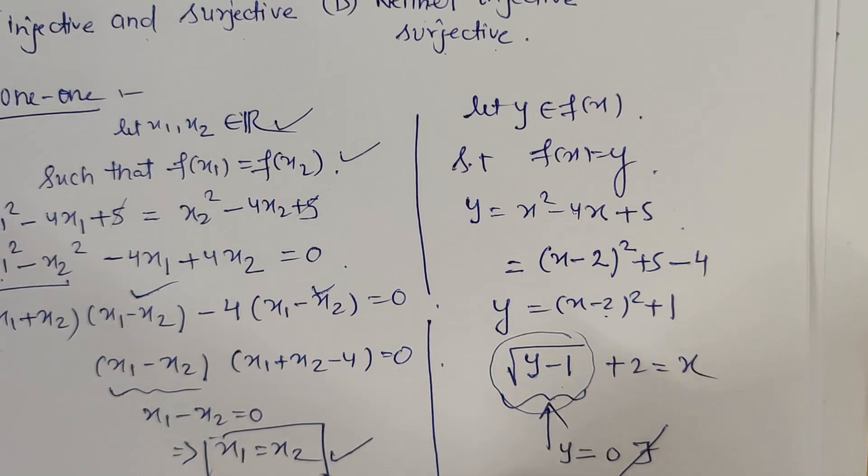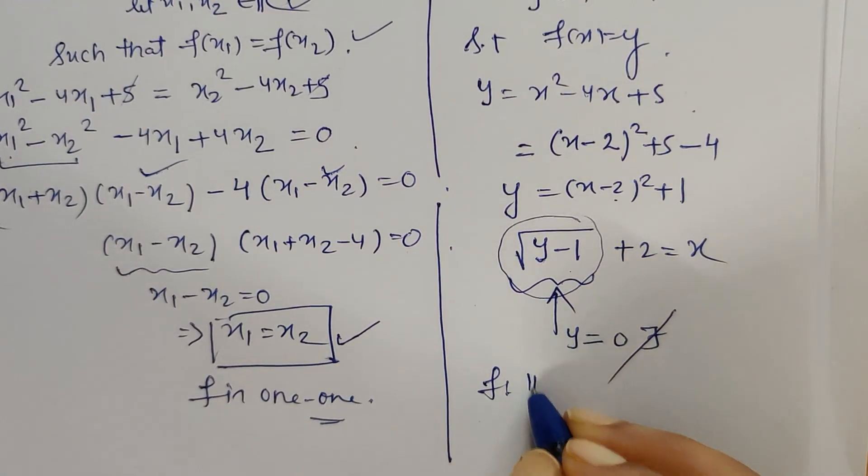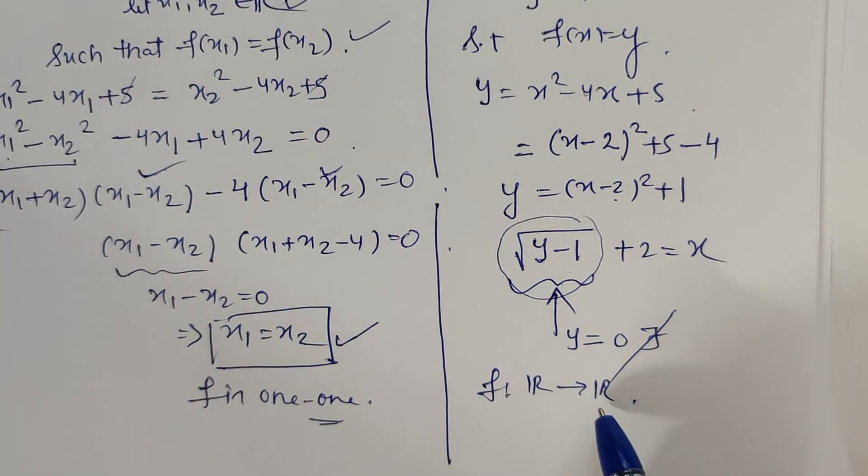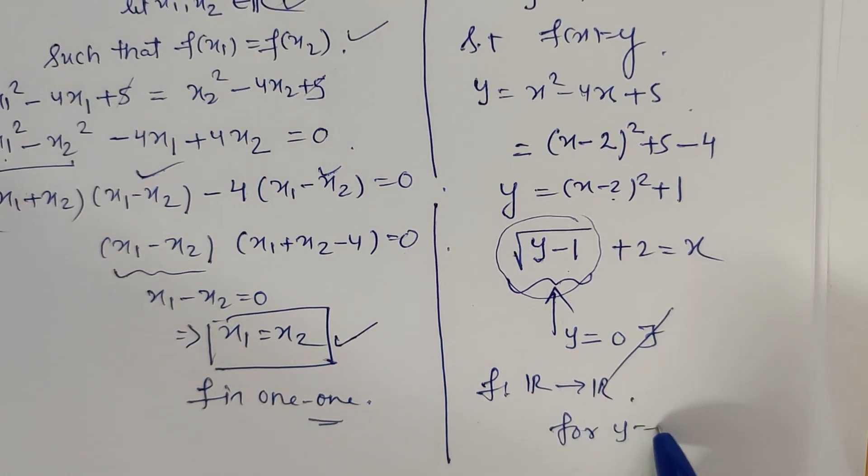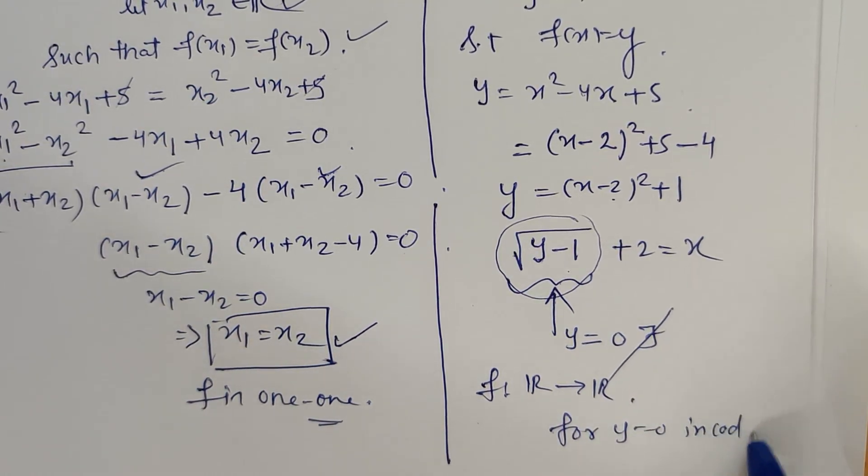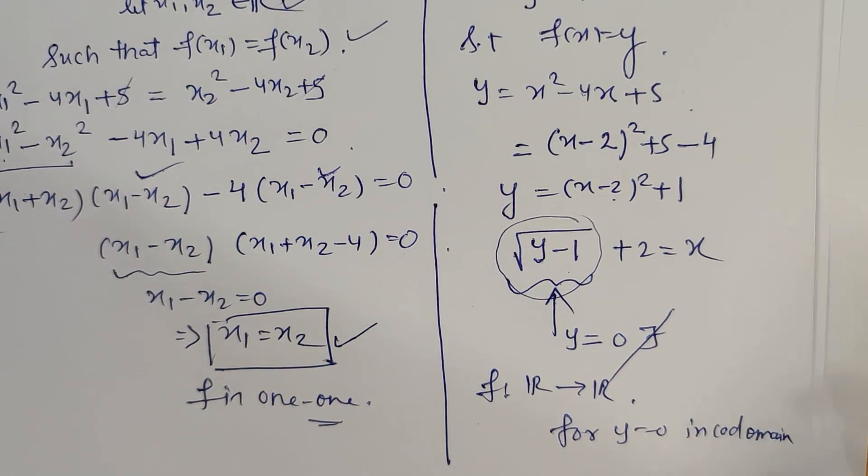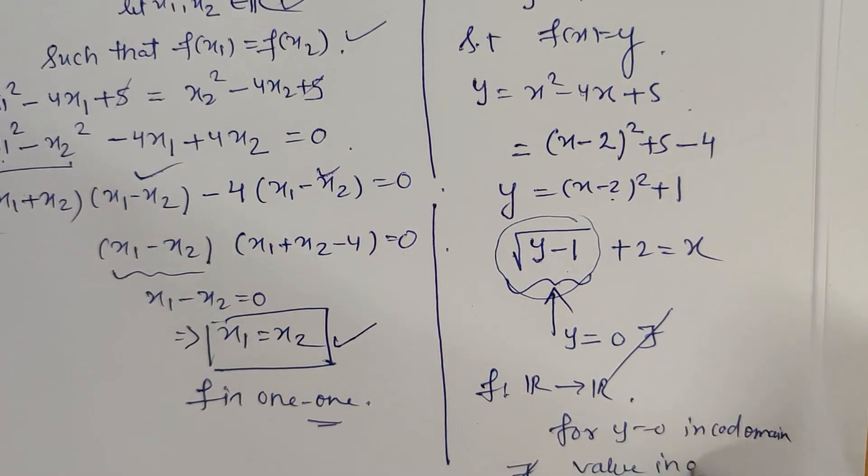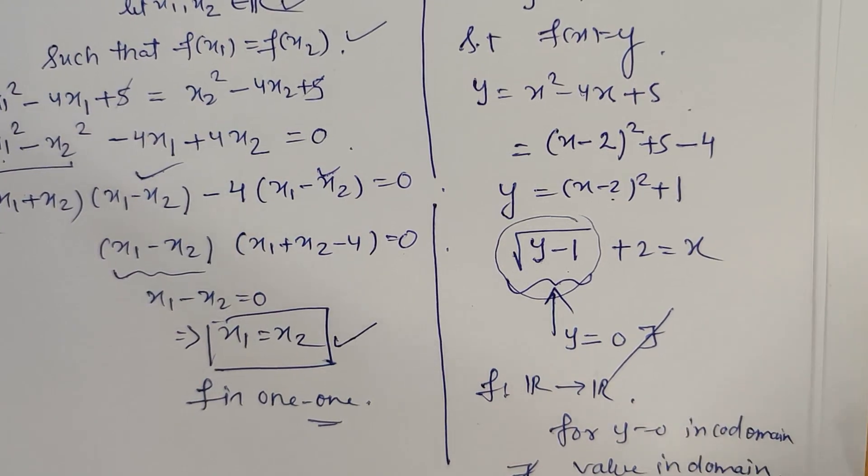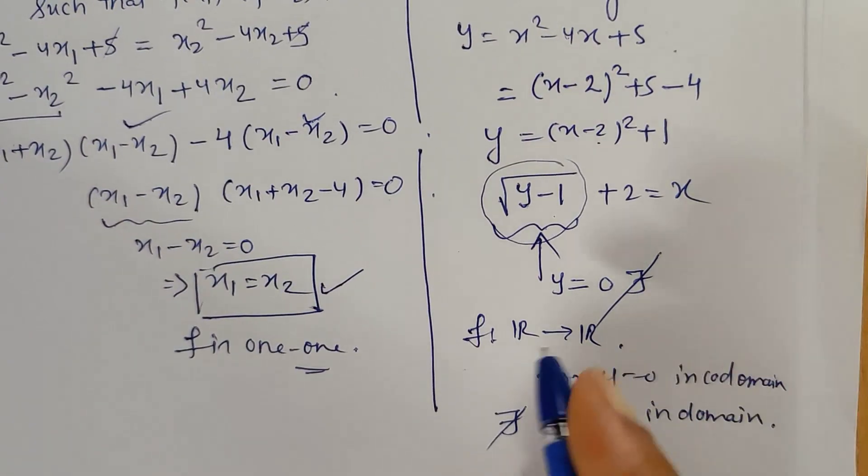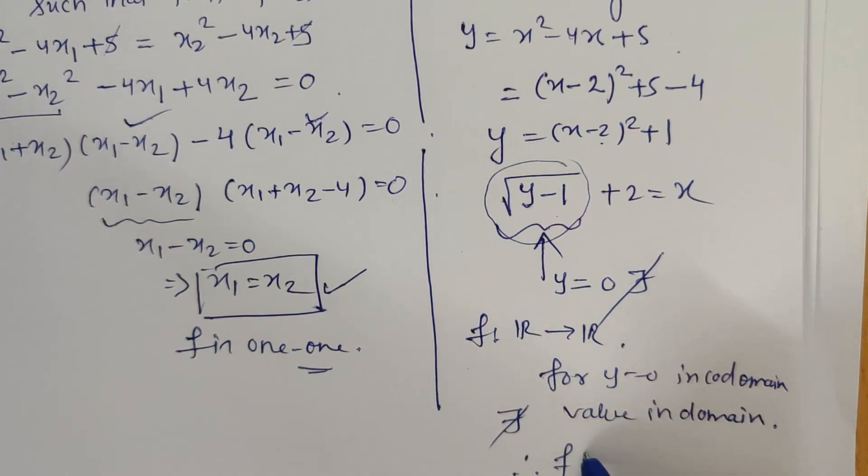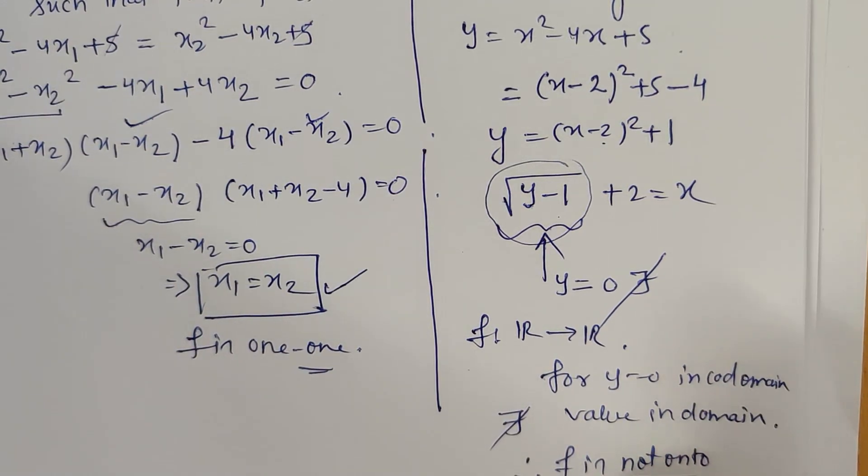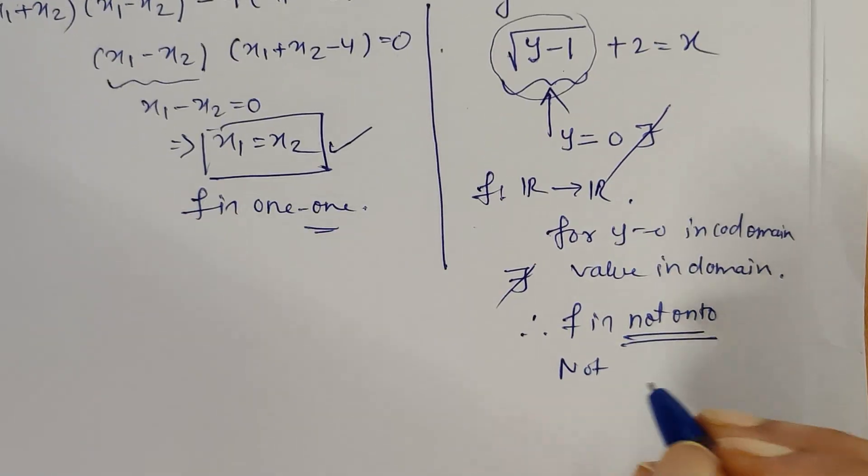What we can conclude: the function is defined from R to R, but here what we see is that for y = 0 in codomain, there does not exist a value in domain, which is the necessary condition for any function to be onto. Therefore, f is not onto or f is not surjective.